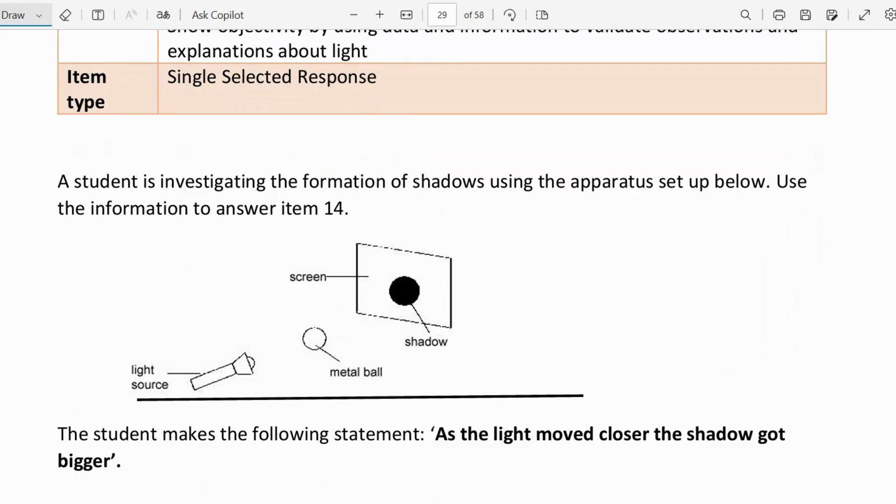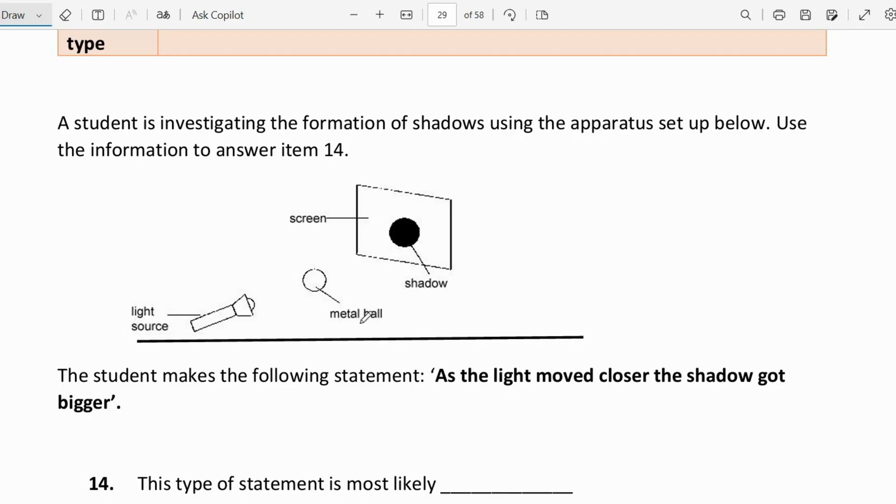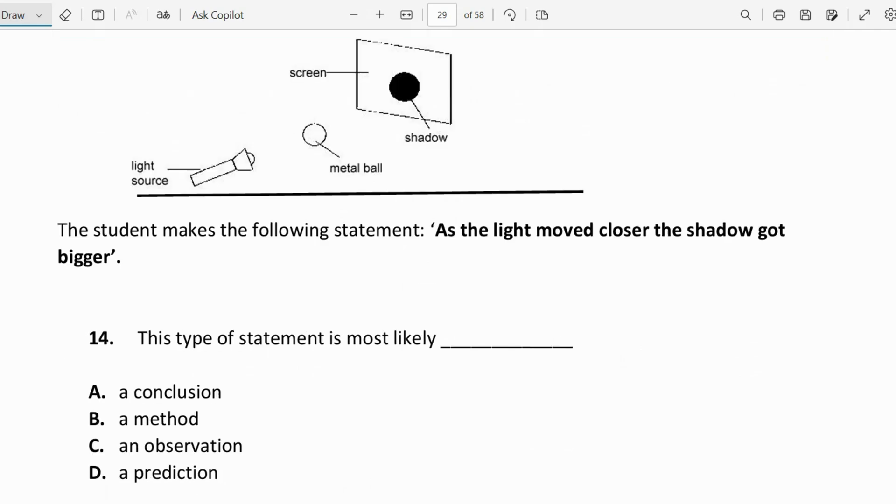Let's move on to the next question. A student is investigating the formation of shadows using the apparatus set up below. Use the information to answer item 14. We see the light source here and there's a metal ball, and then there's a shadow that is formed on the screen. The student makes the following statement: as the light moves closer, the shadow got bigger. This statement is most likely to be a conclusion, a method, an observation, or prediction. This would be a conclusion because this is concluding what would happen as a result of this experiment.